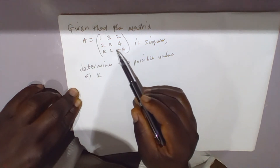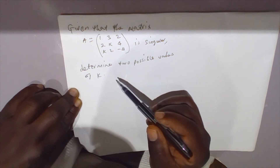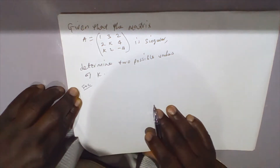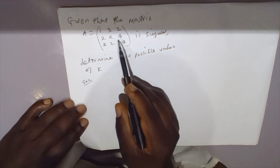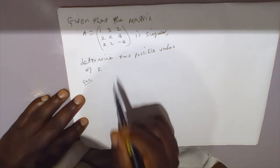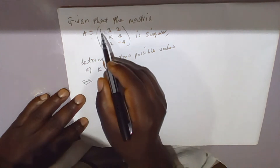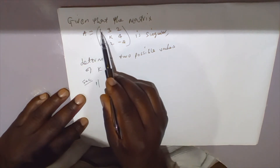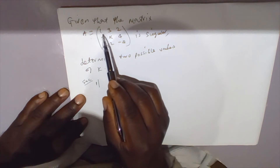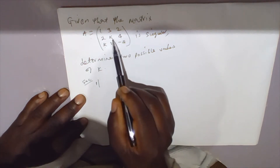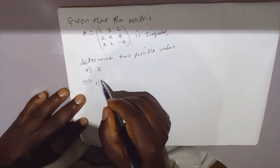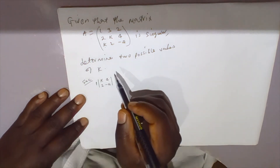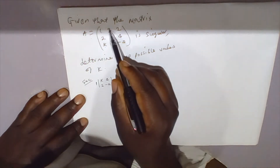We expand the determinant of this matrix. We write down element 1, then minus element 2 — blocking that column and row — giving us the 2x2 submatrix k, 4 / 2, negative 4. Then minus element 3.